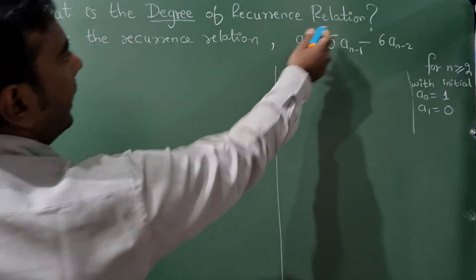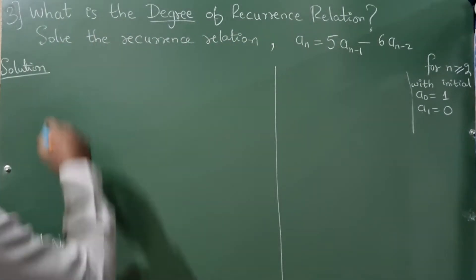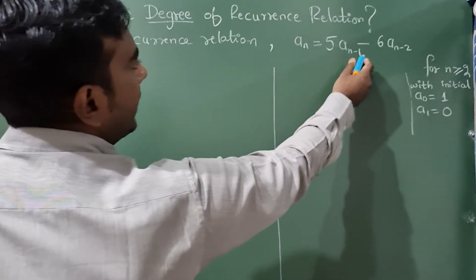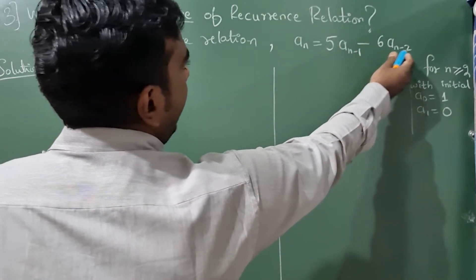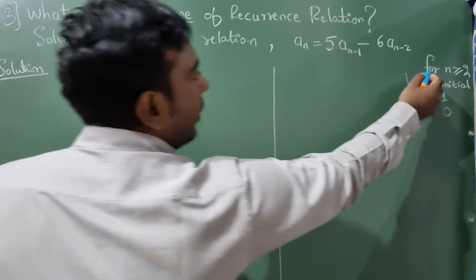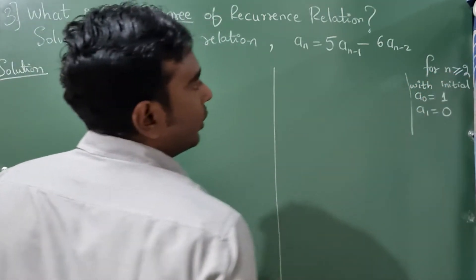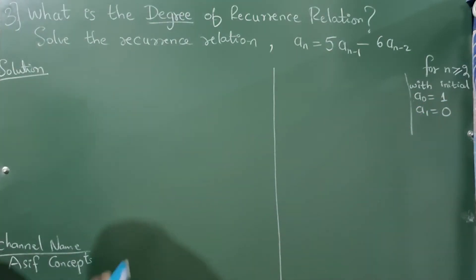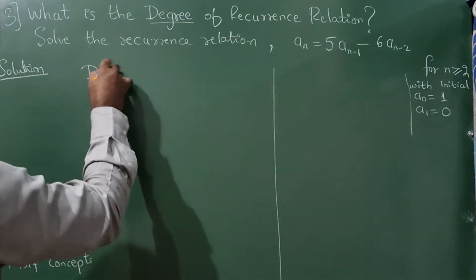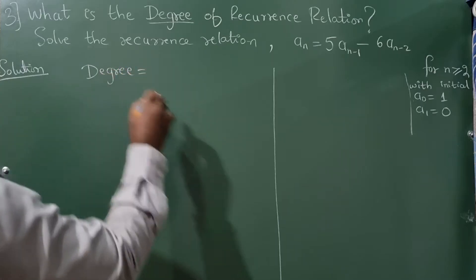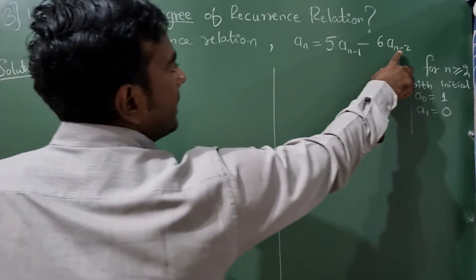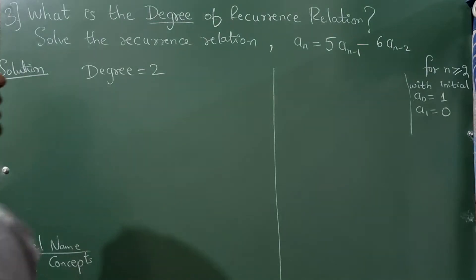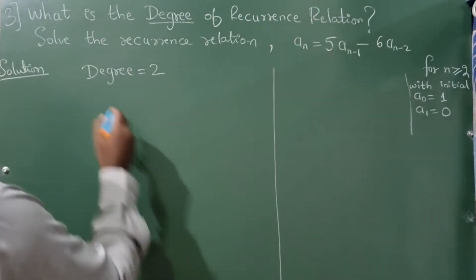What is the degree of the recurrence relation? Solve the recurrence relation: aₙ = 5aₙ₋₁ - 6aₙ₋₂ for n ≥ 2, with initial conditions a₀ = 1 and a₁ = 0. First, let me write the degree. Since there is aₙ₋₂, the degree will be 2. Now take all the terms on the left hand side.